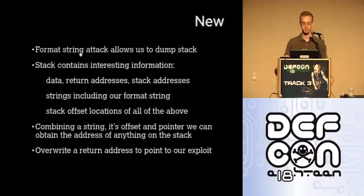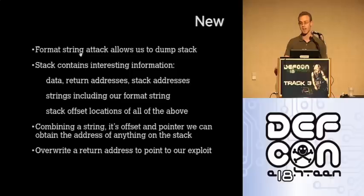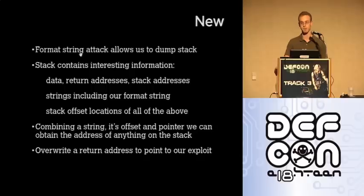Most stacks contain data, code addresses — addresses that point to code — as well as addresses that point to other information on the stack, such as data pointers or code pointers. What's also interesting is that the string we pass for a format string attack is also on the stack, so we can locate that as well as its offset. With this information, we can locate the address of anything on the stack, which is useful. For example, if we find a code pointer we want to override on the stack, we can find out the address of that pointer and then override it with our format string attack.